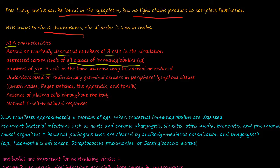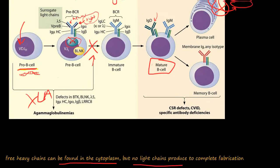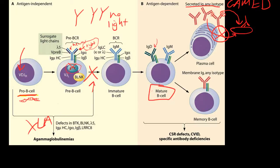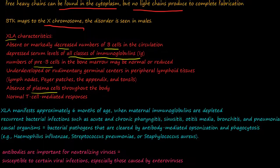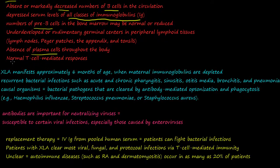There is underdeveloped or rudimentary germinal tissue in the peripheral lymphoid tissue — such as lymph nodes, Peyer's patches, the appendix, and tonsils — because the B cells residing there aren't being matured. There is a complete absence of plasma cells, since B cells never reach maturity and cannot become activated to turn into plasma cells. However, normal T cell-mediated responses remain intact.